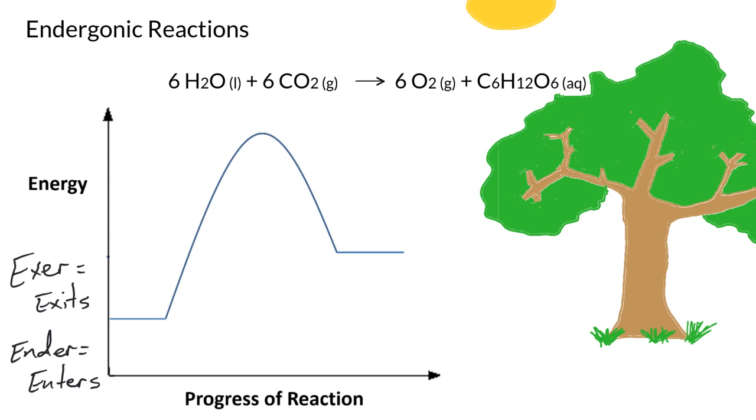As an example of an endergonic reaction, we're going to look at photosynthesis. Hopefully you remember photosynthesis is the reaction in which plants use light to produce energy. Photosynthesis literally means photo, light, and synthesis, producing.